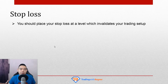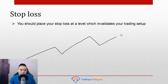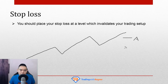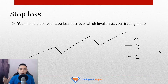Let me explain. If you look at a trending market — say the market is in an uptrend — at which point would you say this uptrend is invalidated or destroyed? Will it be at point A, point B, or point C? Take three seconds: one, two, three.